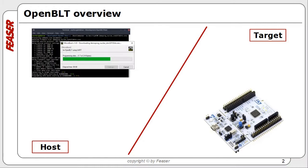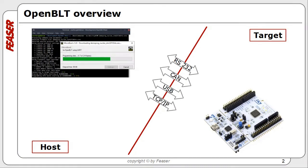Firmware updates can be made via the serial port, controller area network, USB, the internet or your local network, and even from a locally attached SD card.